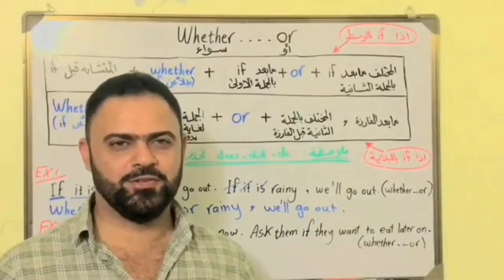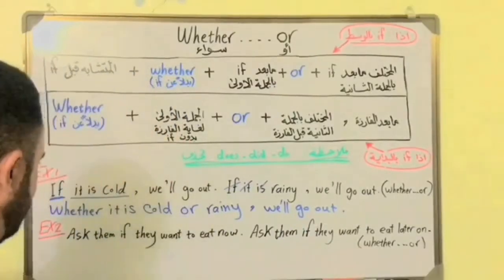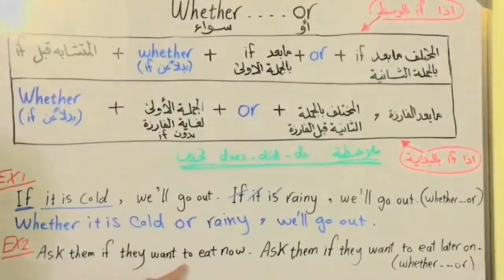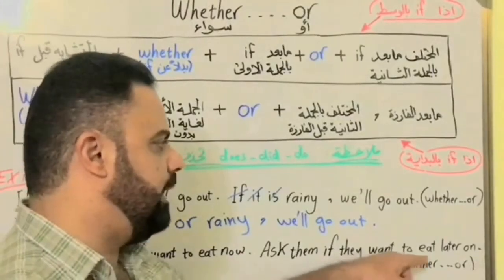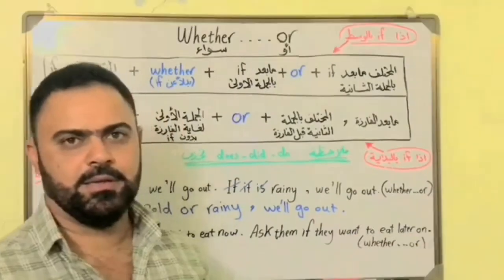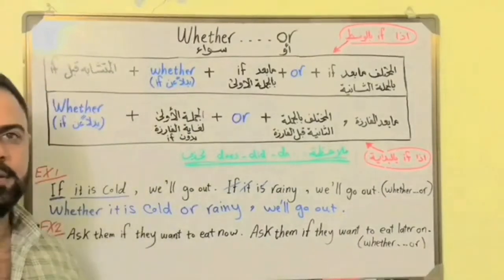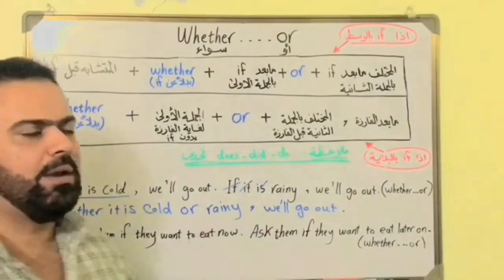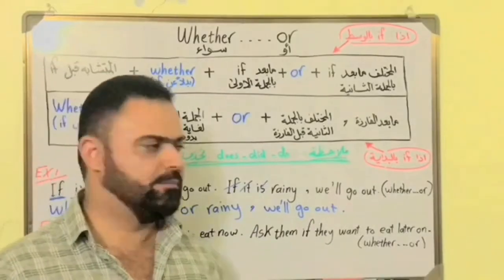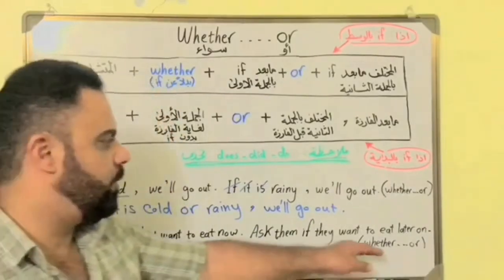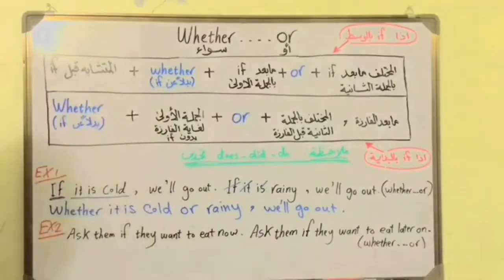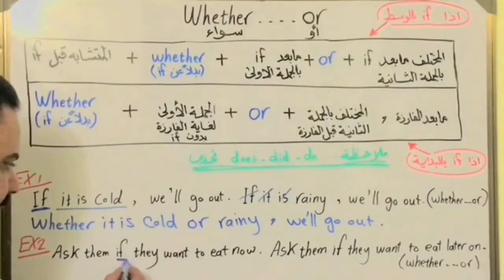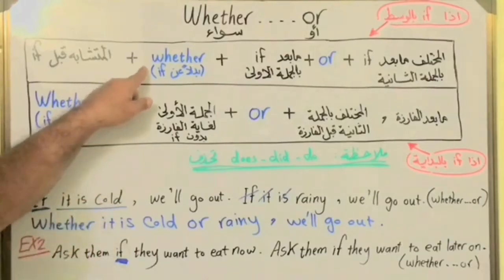For the second example: Ask them if they want to eat now. Ask them if they want to eat later on. Use whether or. We'll see that 'if' is in the middle of the sentence, so we'll use the first rule.